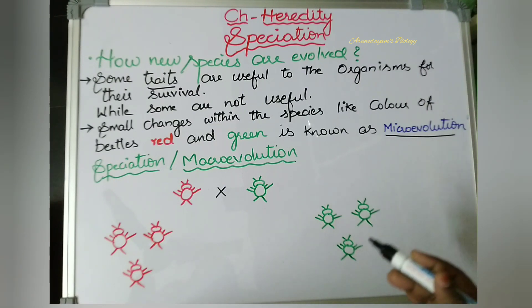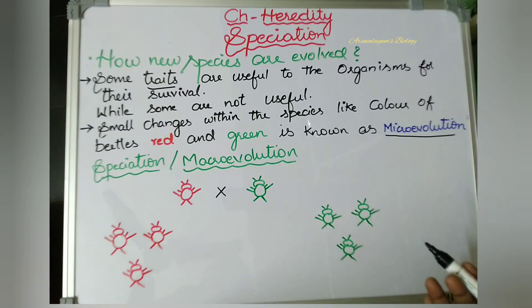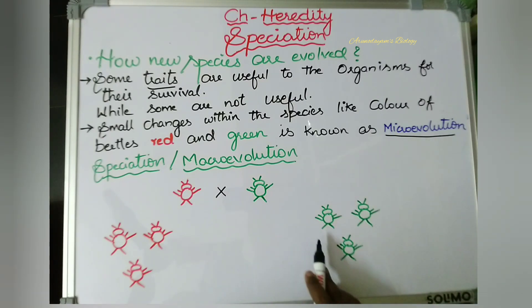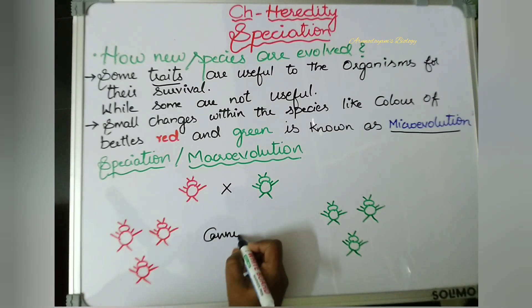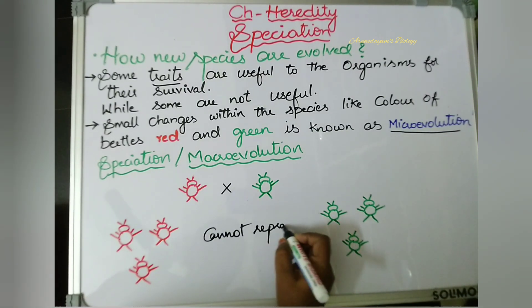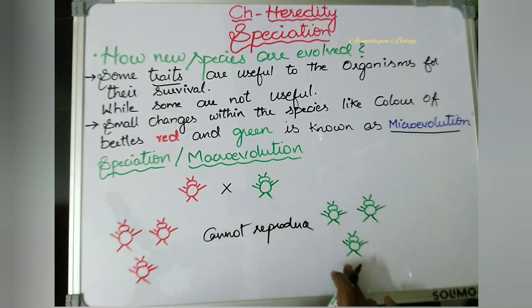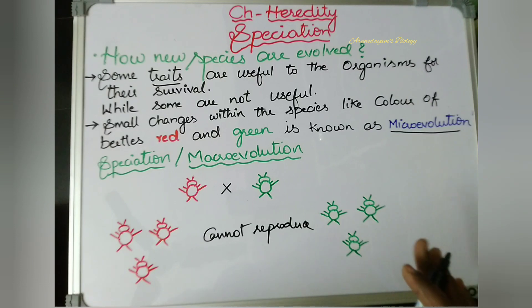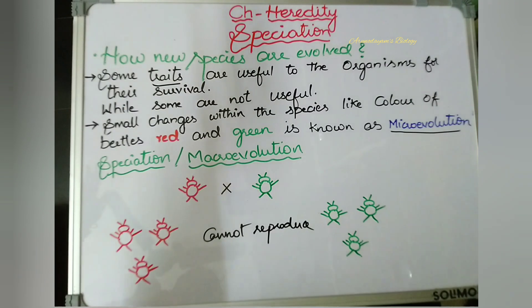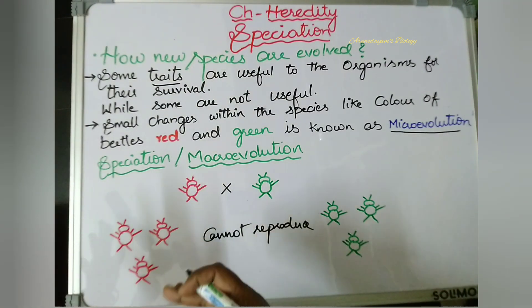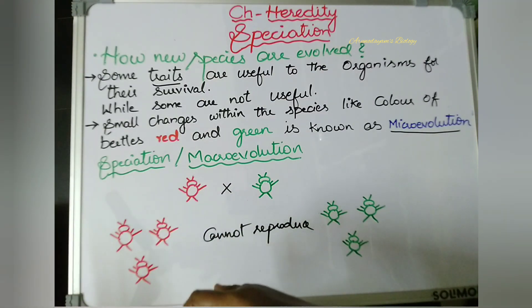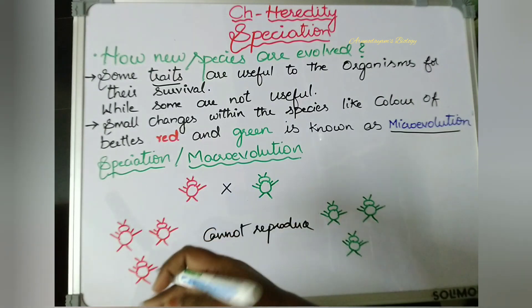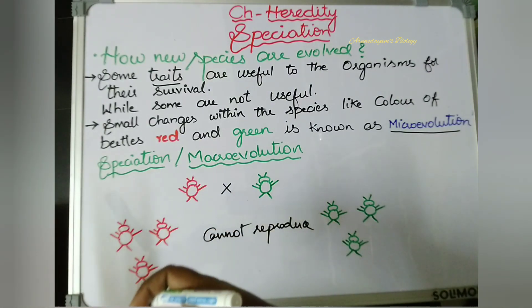So after a few generations, by chance, if these two beetles meet, they cannot reproduce among themselves — they cannot mate with each other. Through all these generations, the red-colored beetles were adapting to their environment. At the same time, they showed some bodily changes and variations in order to adapt to their new environment. Similarly, the green-colored beetles also produced variations in order to adapt to their environment.